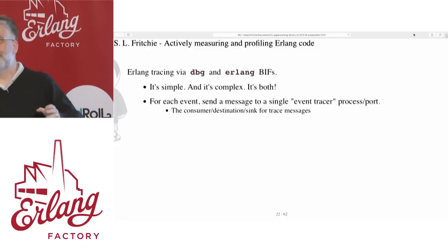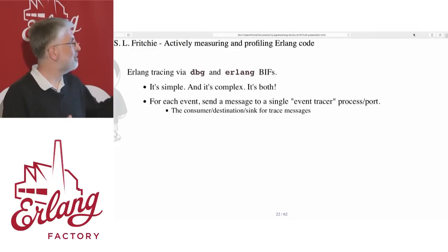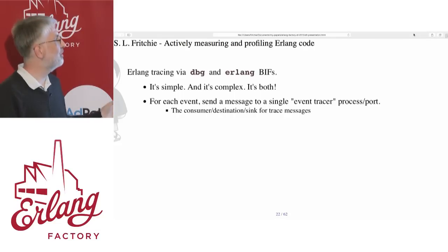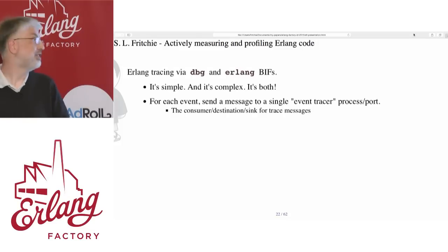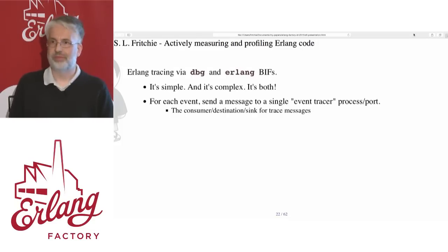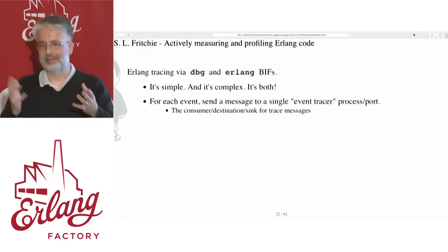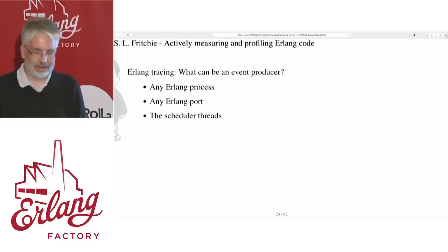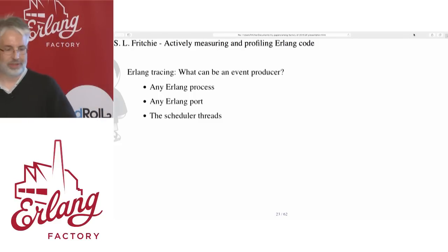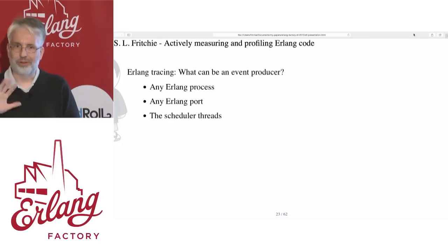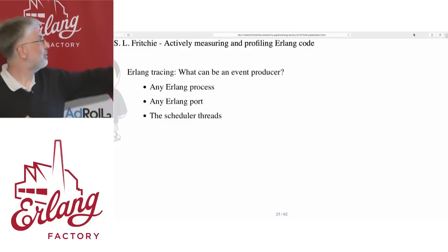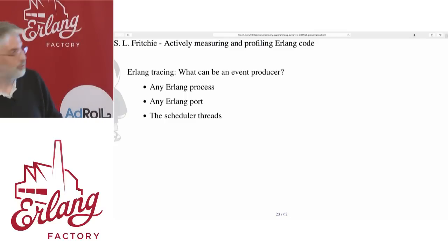For each event, whenever it happens, we send a message which is a tuple to an event tracer. The thing can be an Erlang process or a port — either a file port or a TCP port. You can think of that event tracer as the consumer or sink or destination for trace messages. The source or producer could be an Erlang process, a port, or the scheduler threads. Since we're really interested in Erlang processes and BEAM code execution, we'll focus on that.